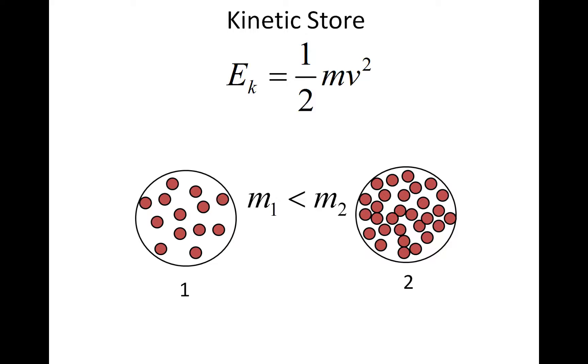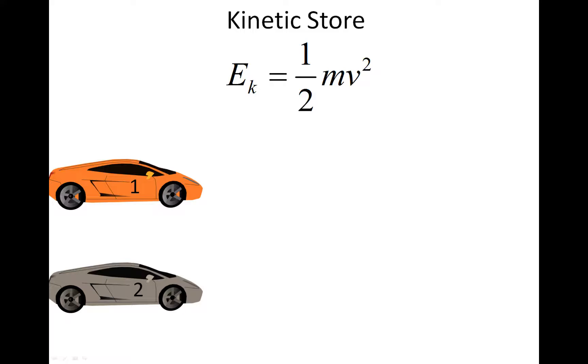and mass two. Mass one is smaller than mass two, which means the energy in the kinetic store of mass one will be smaller than the energy in the kinetic store of mass two. Next, the velocity component. If we